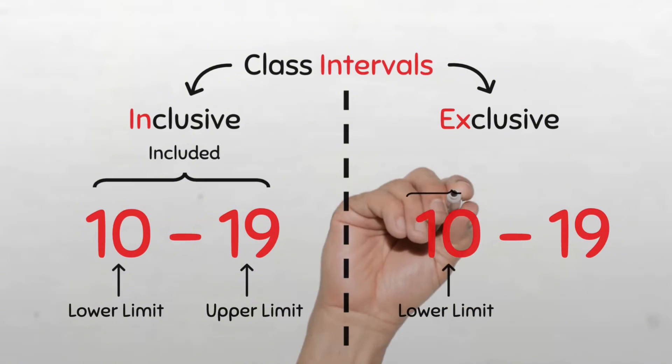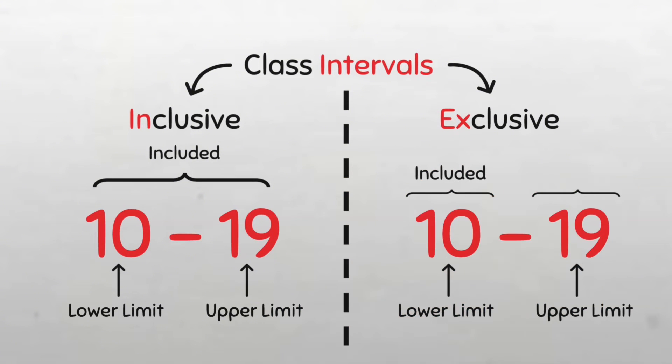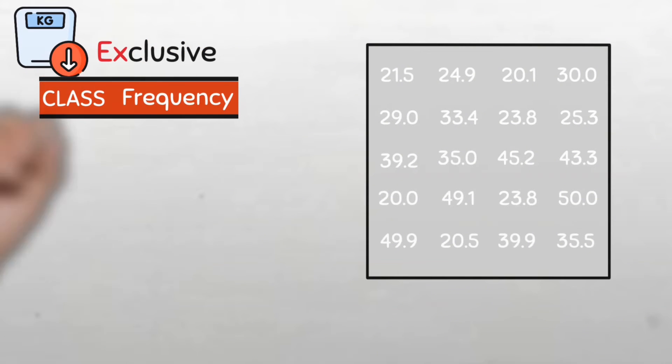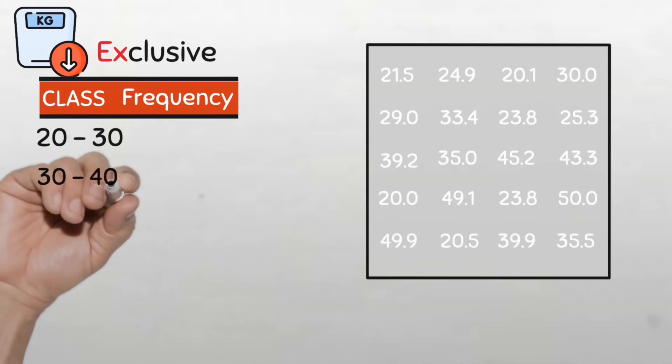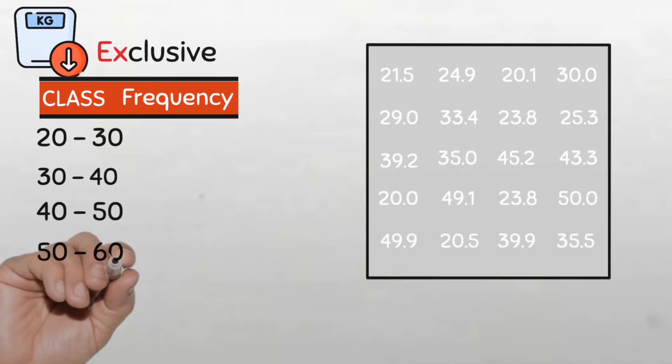So this brings us to the exclusive type of classification. Remember we said in the beginning that we had the inclusive type of classification as well as the exclusive type. While in the inclusive category, both the upper and lower limits of the class are included. In the exclusive type, the lower limit of each class is included but the upper limit is excluded from the class. So even though we write it in the class, it is not included when we count.